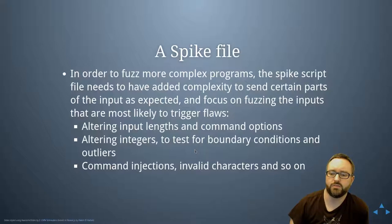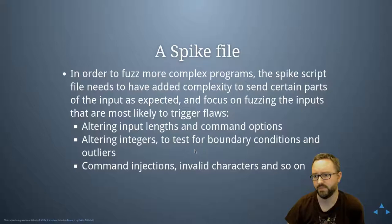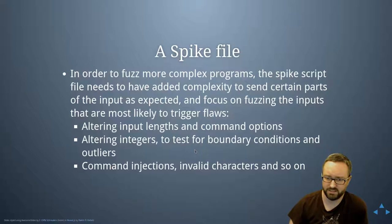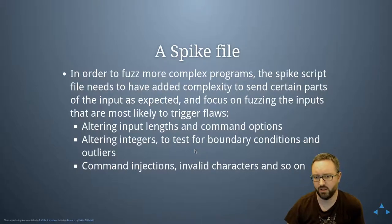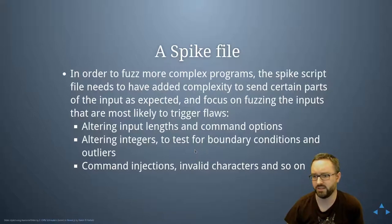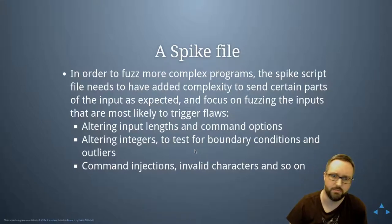To fuzz something more complicated, the Spike script needs added complexity — sending certain parts of the input as expected, while focusing on fuzzing inputs most likely to trigger flaws, such as altering input length, command options, integers for boundary conditions and outliers, command injection, and special characters.